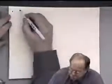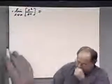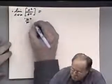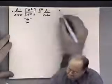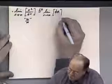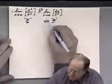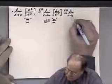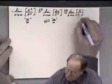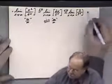Next example: the limit as x goes to infinity of x squared over e to the x — infinity over infinity form. Applying L'Hôpital's rule: derivative of x squared is 2x, derivative of e to the x is e to the x. Still infinity over infinity, so apply L'Hôpital's rule again: derivative of 2x is 2, derivative of e to the x is still e to the x. Now this is no longer indeterminate — as x goes to infinity the denominator goes to infinity — so the limit is zero.